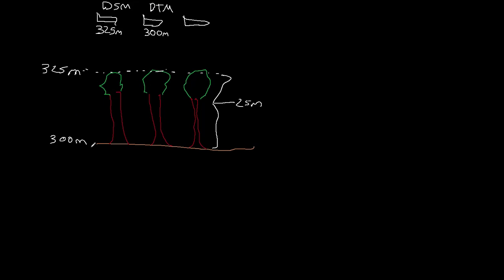And then finally the digital height model, or DHM. What value is this going to get — what pixel value would this have? It's going to look at these trees and say: I want to know what the height of the object is above the surface. So it's actually going to grab 25 meters.